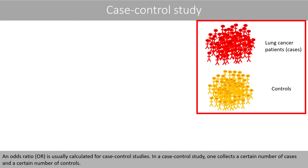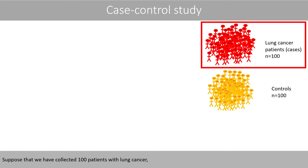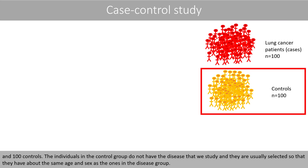An odds ratio is usually calculated for case-controlled studies. In a case-controlled study, one collects a certain number of cases and a certain number of controls. Suppose that we have collected 100 patients with lung cancer and 100 controls.